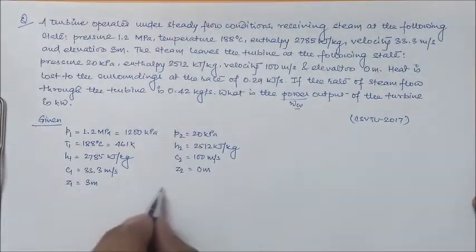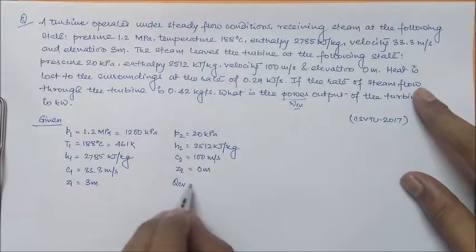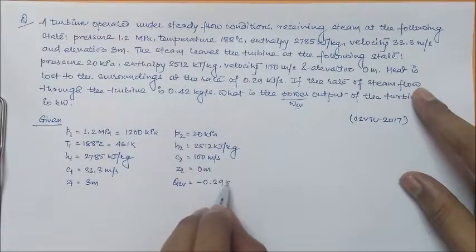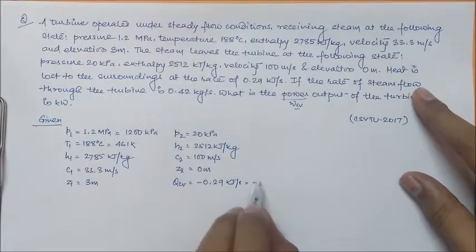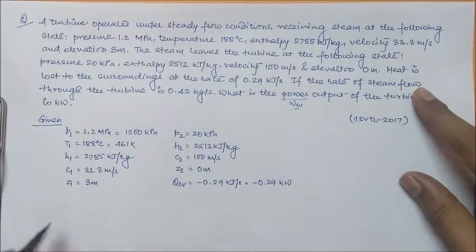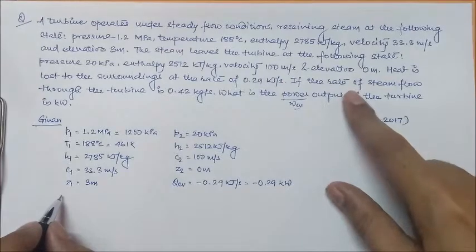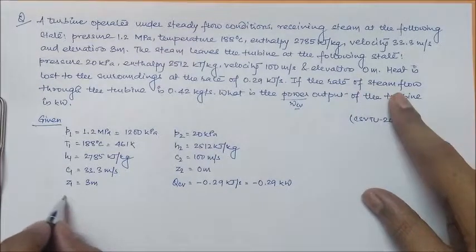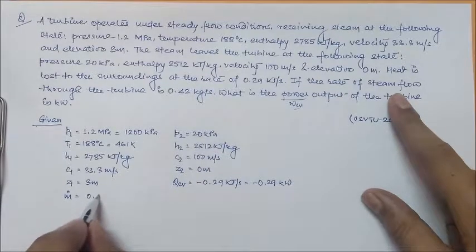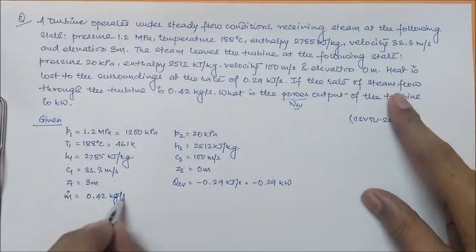Also, the heat lost to the surrounding, that is QCV, is minus 0.29 kilojoule per second, or minus 0.29 kilojoule per kg. And what other thing is given? The rate of steam flow through the turbine, that is mass flow rate m dot, is 0.42 kg per second.